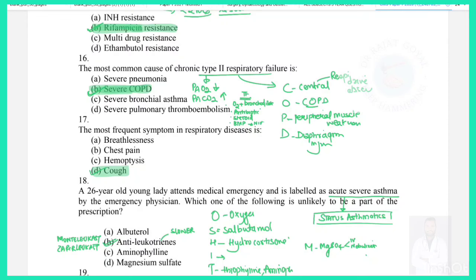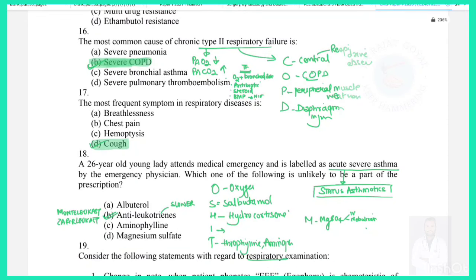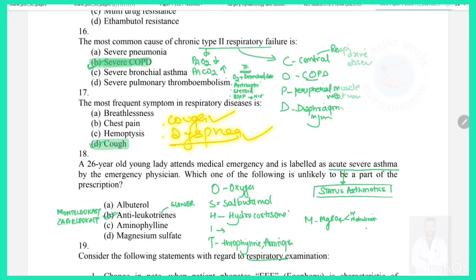Question 17: The most frequent symptom in respiratory diseases — in any respiratory disease the two most common symptoms are cough and dyspnea. The best answer is cough, though breathlessness is also a most frequent symptom.